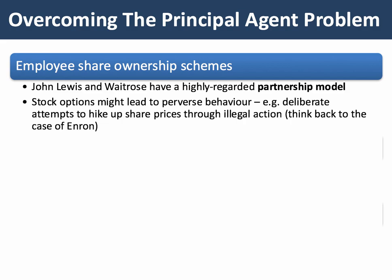One option is to give employees a financial stake in the business through an employee share ownership scheme. Two businesses in the UK — John Lewis and Waitrose — are jointly owned and have a well-established and highly regarded partnership model for their employees. The annual publication of the John Lewis and Waitrose bonus is eagerly awaited by people who work within the organization, so giving employees shares in the business could be a useful approach.